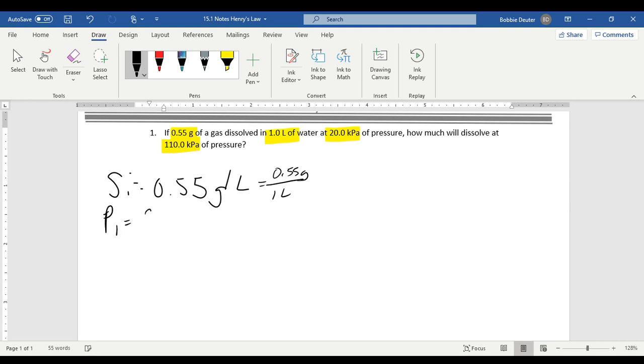Our P1 is equal to 20 kPa. And then we have our P2 is equal to 110 kPa, and S2 would be our unknown.